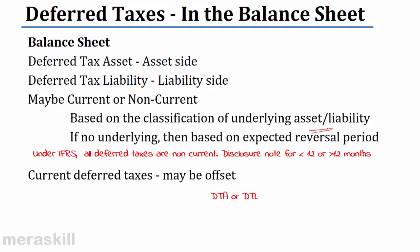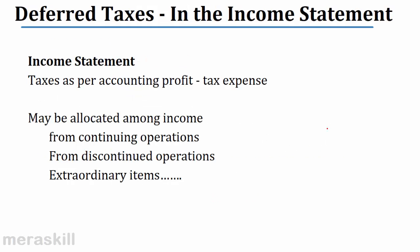In the income statement, we find net profit as accounting profit minus tax expense. This tax may be allocated among income from continuing operations, discontinuing operations, and extraordinary items — split depending on the section to which it belongs in the income statement.